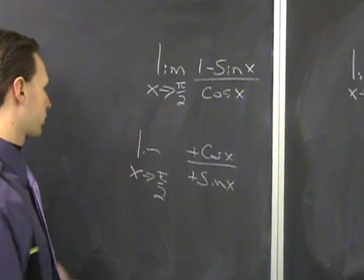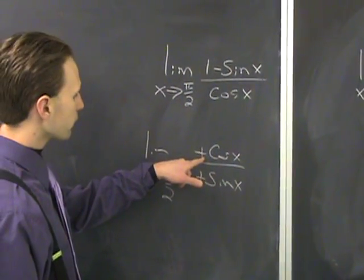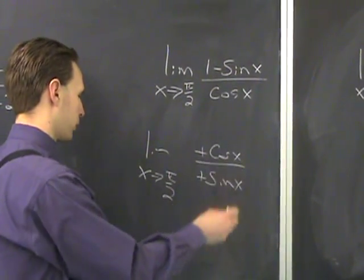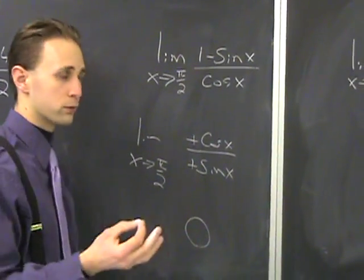Can we re-evaluate it there? The cosine of π over 2 is 0, and sine of π over 2 is 1. So this new limit is 0. That's the answer to the old one.